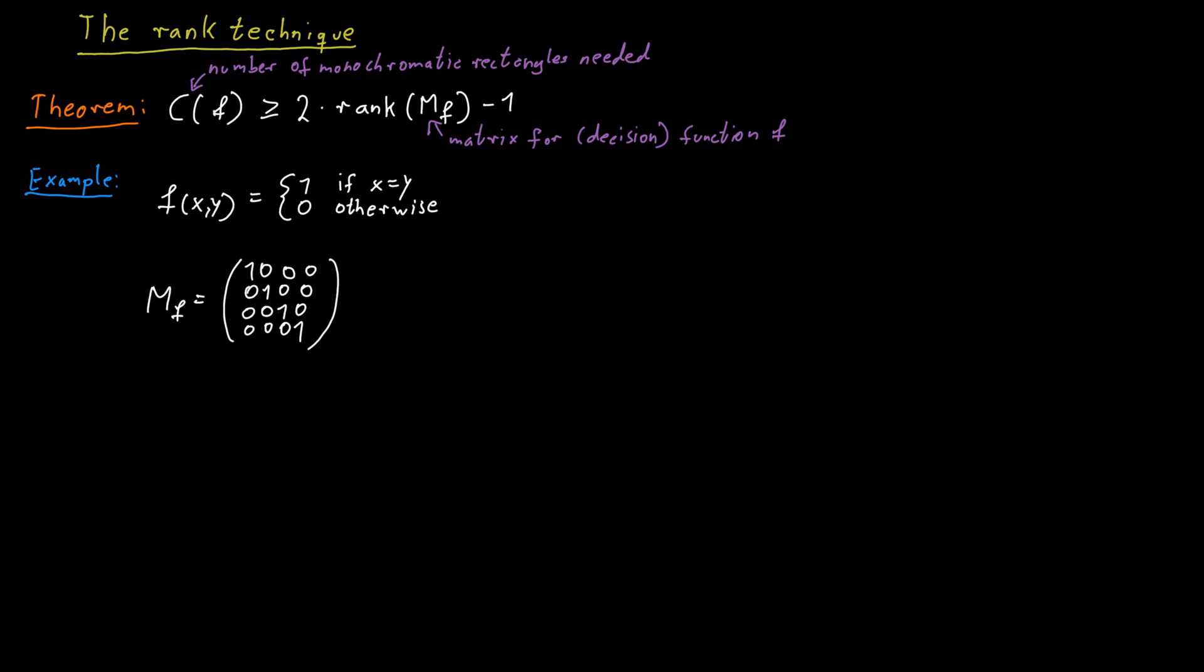So the question is how many columns or rows does this matrix have? If Alice and Bob both get a bit string of length n, then we need to look at all the possible combinations of bit strings of length n. There are 2 to the n many such bit strings. Therefore, the matrix has 2 to the n many rows and 2 to the n many columns. And therefore, the rank of this matrix is 2 to the n.